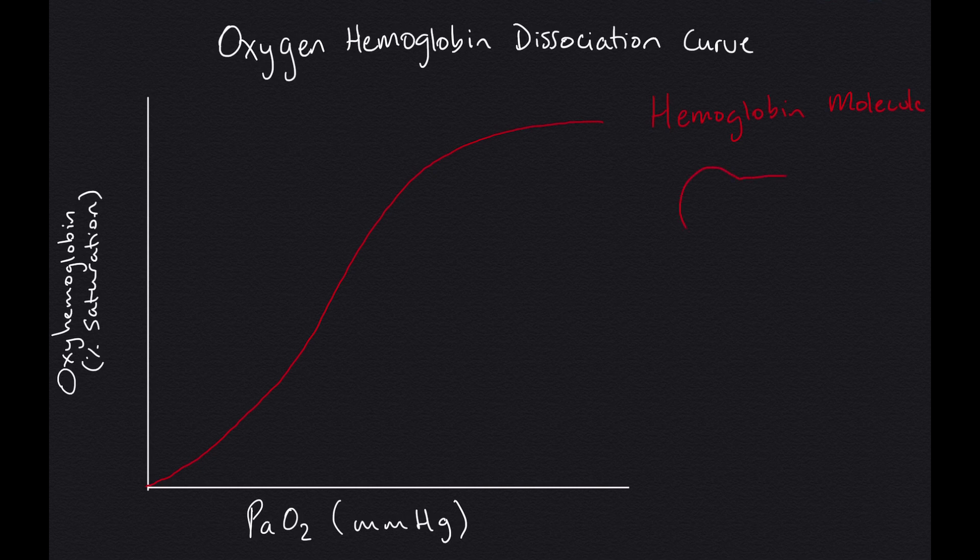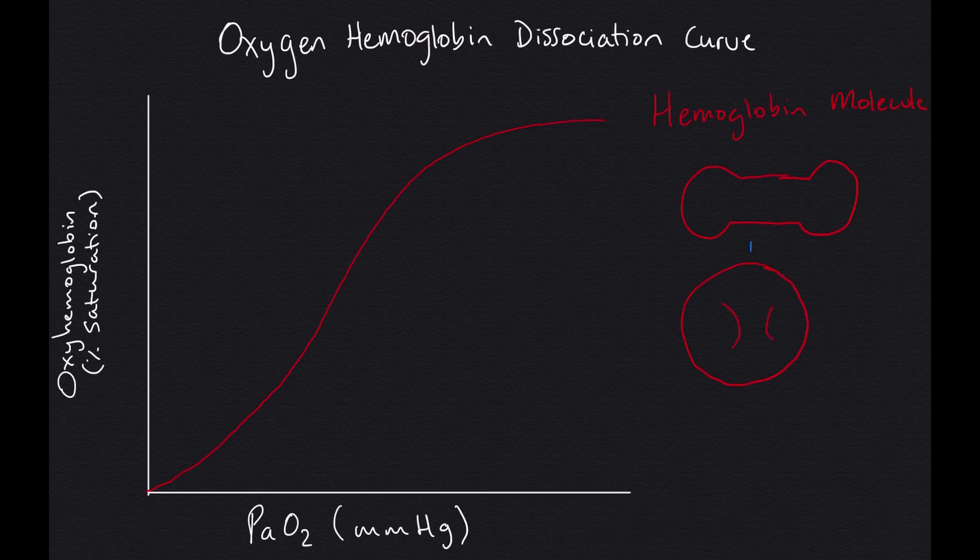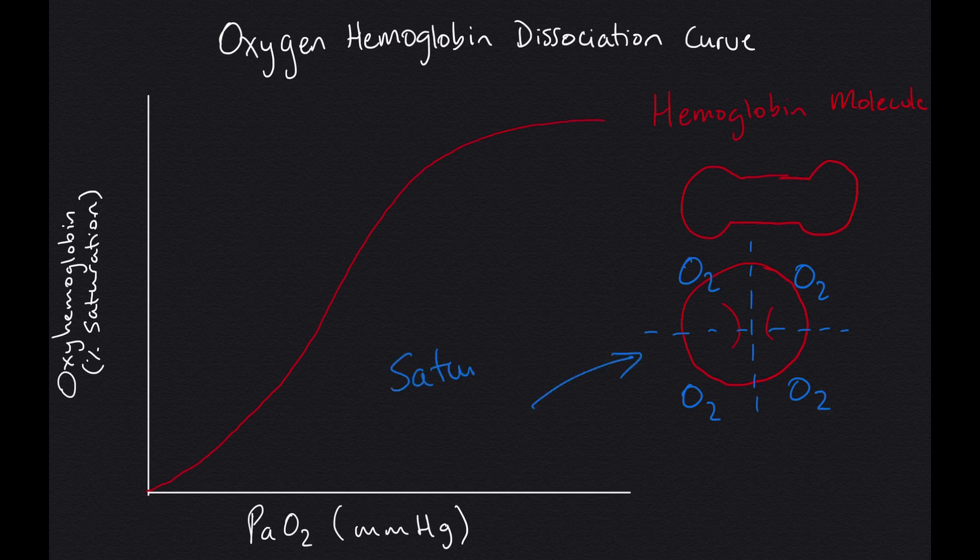The y-axis shows the percentage of oxygen saturated hemoglobin molecules. This curve shows hemoglobin's normal affinity or attraction to oxygen and the ease with which it will release the oxygen molecules that it's carrying to the tissues.